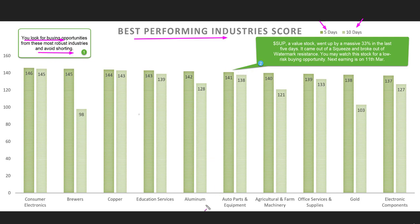Auto parts and equipment is one of the best performing industries. In this industry, SUP is a value stock — it went up by a massive 33% in the last 5 days. It came out of a squeeze and broke out of watermark resistance, breaking out of a base created in the daily chart. The stock is currently overbought. You may watch this stock for a low-risk buying opportunity — next earnings is on 11th March.